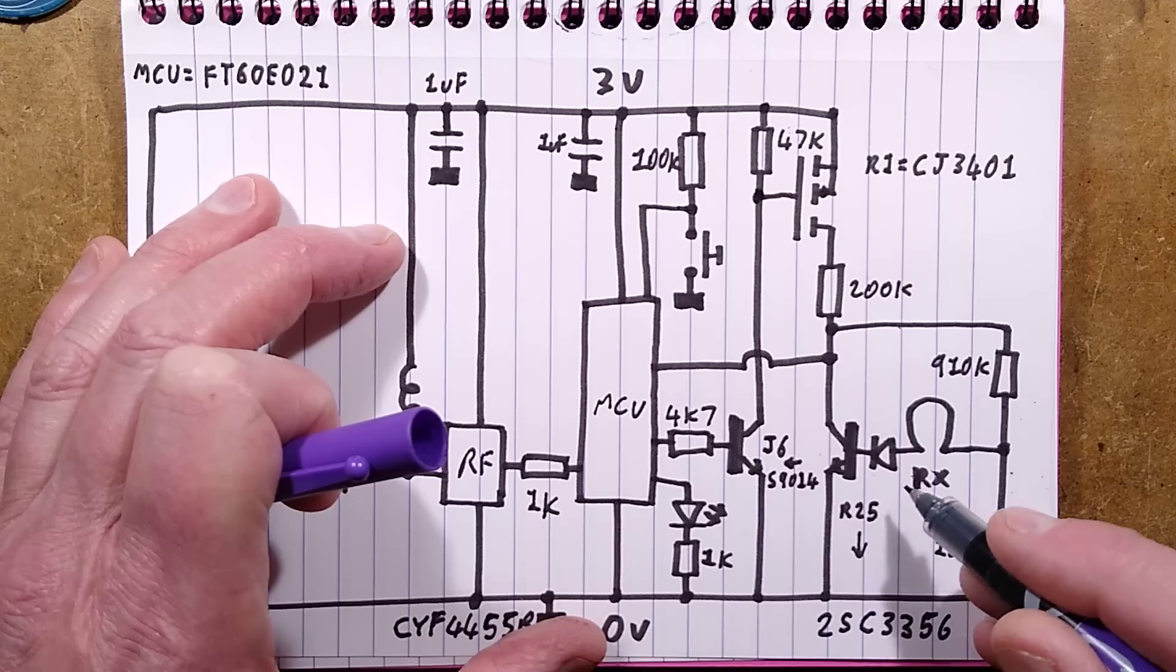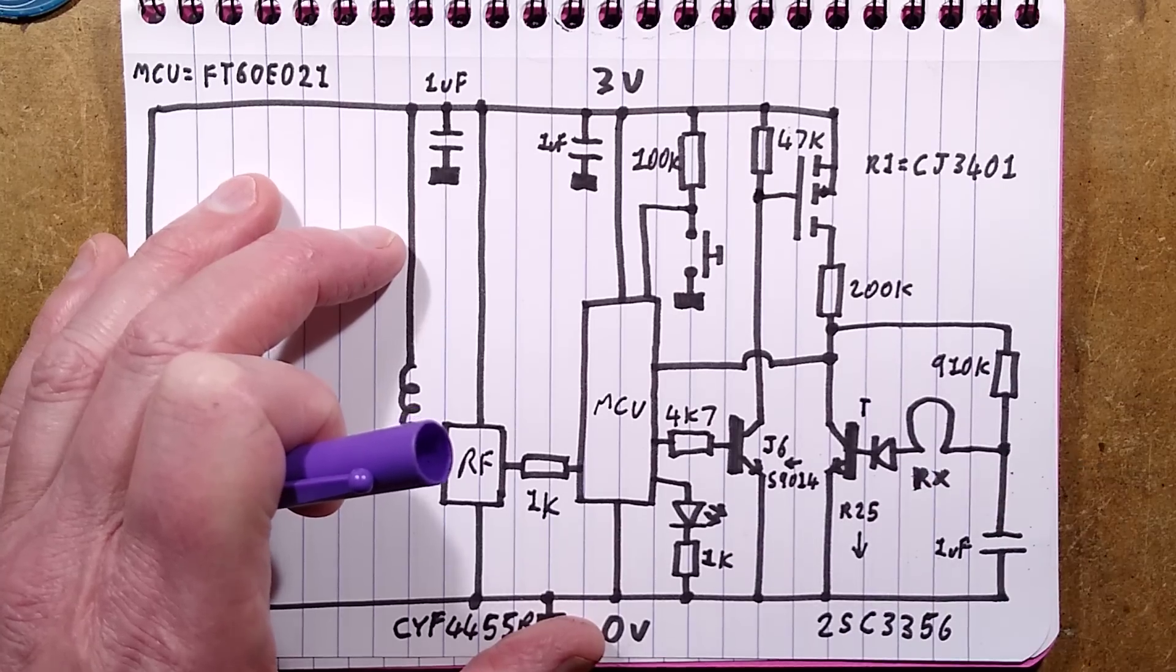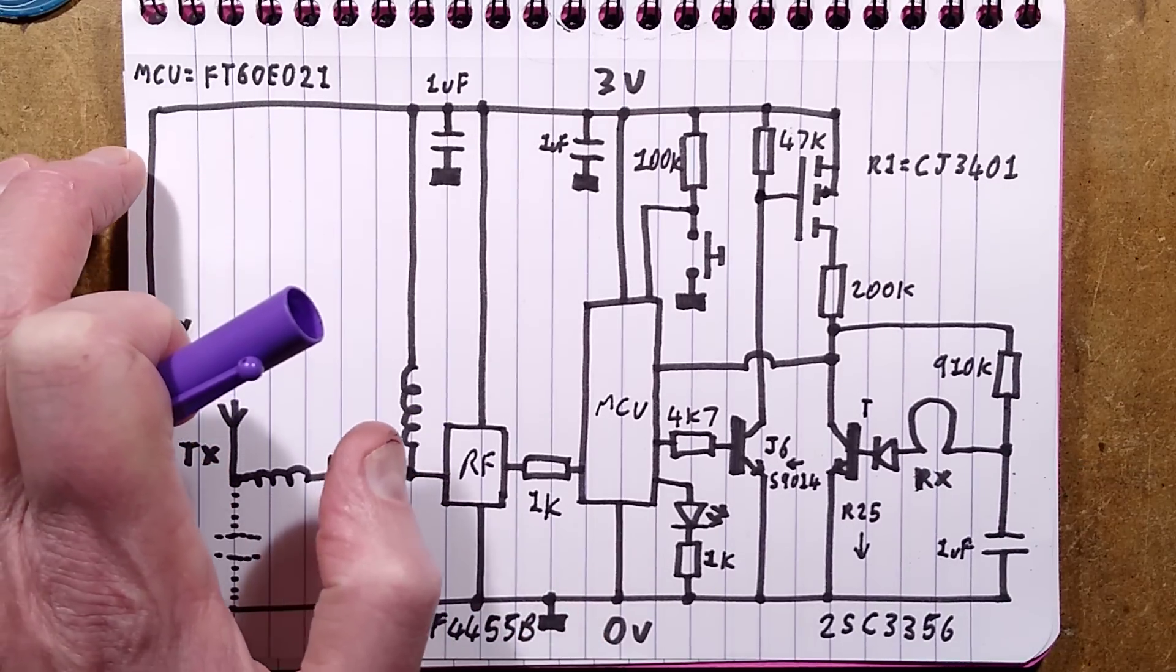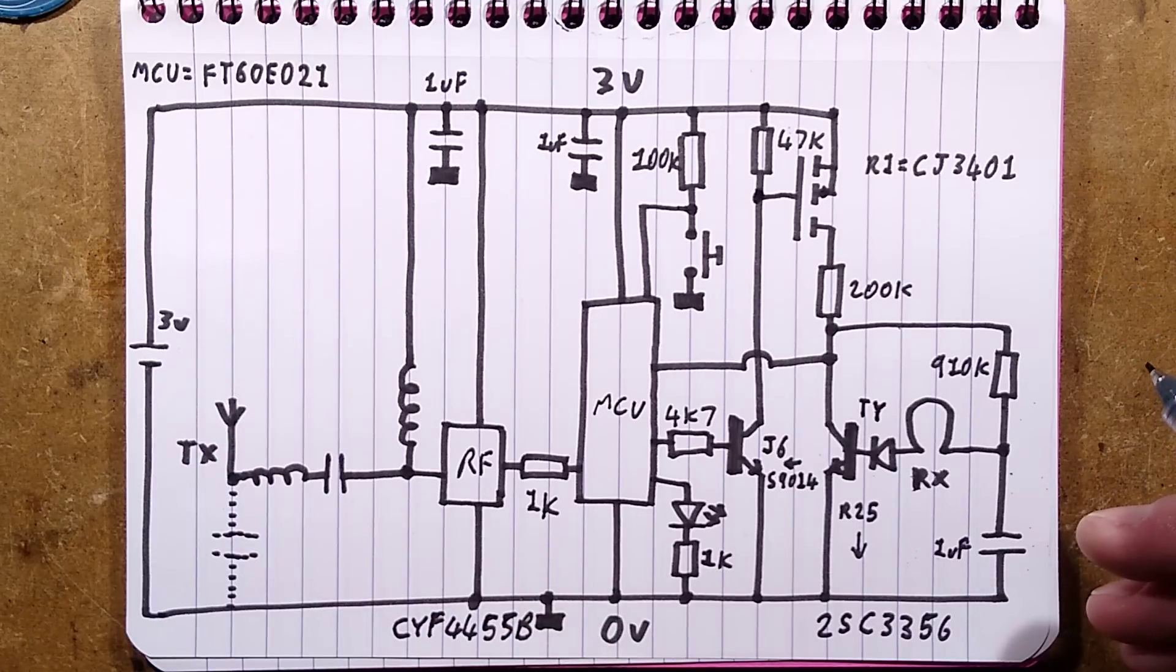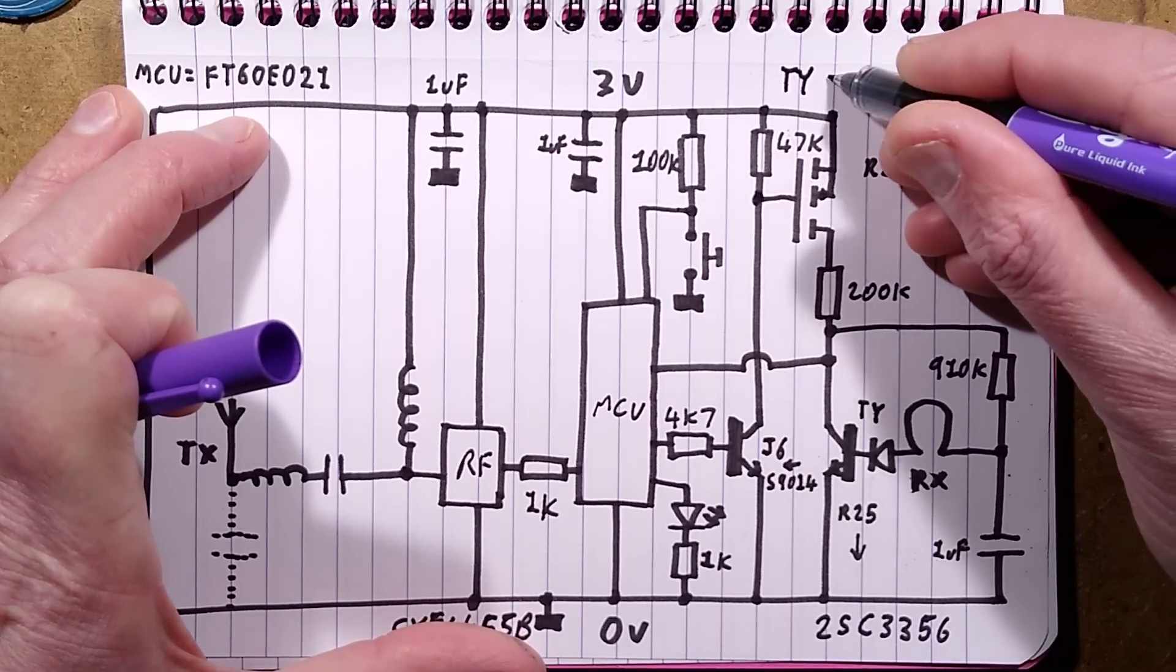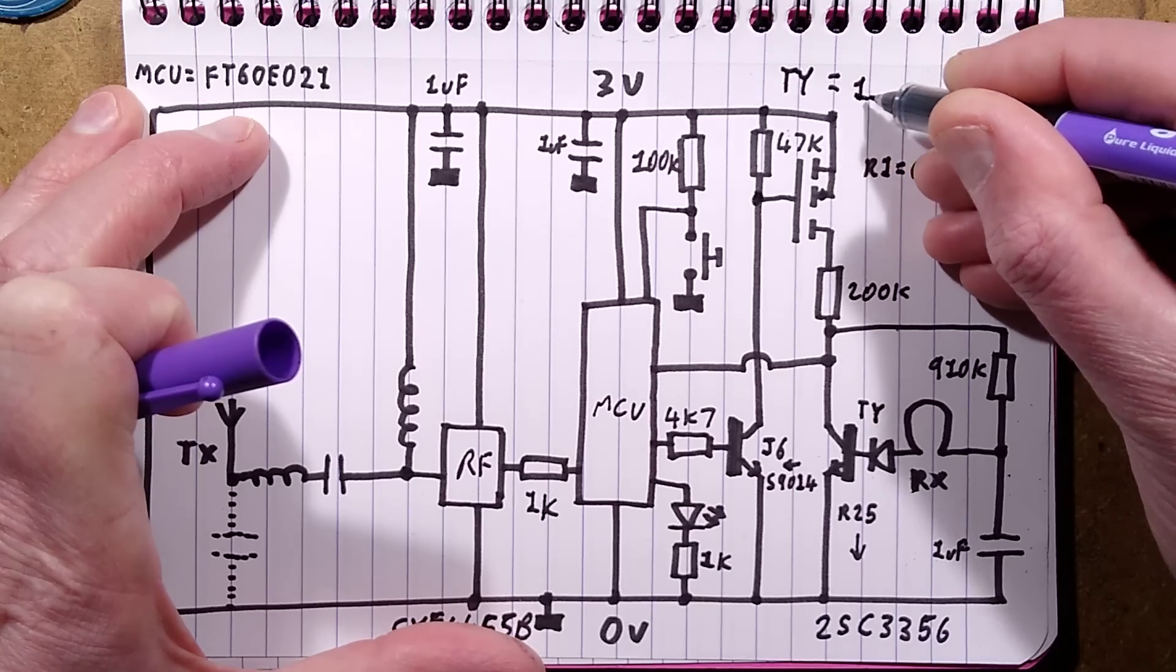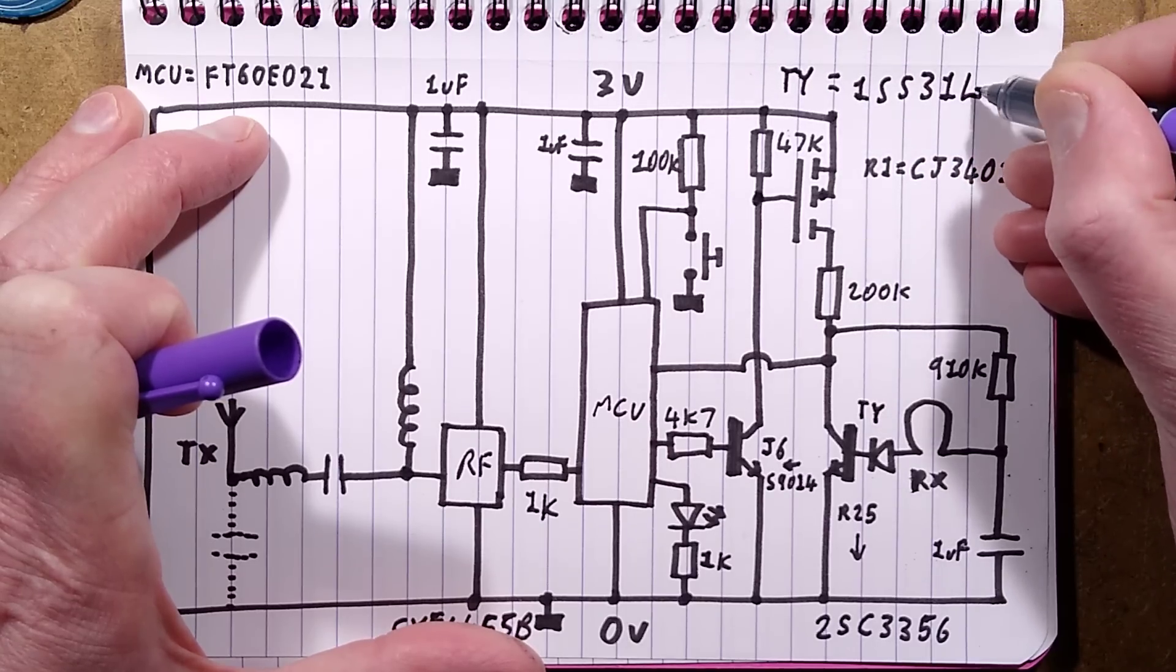The diode is marked TY. TY diode, I've got a note of that somewhere, is 1SS314. And it's an RF diode.